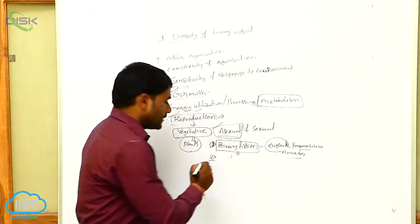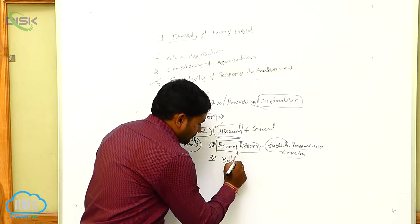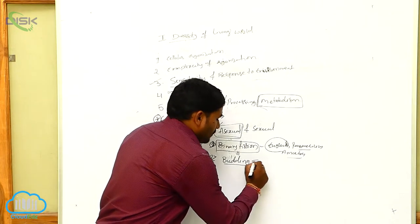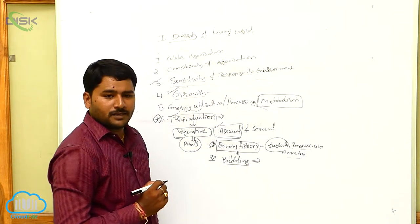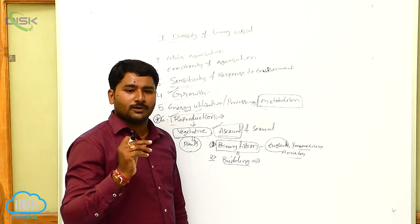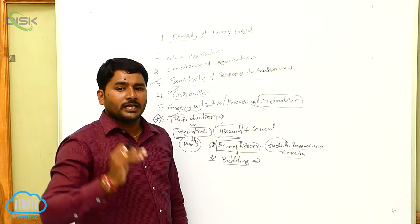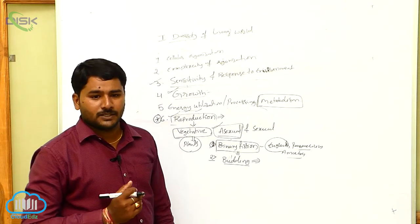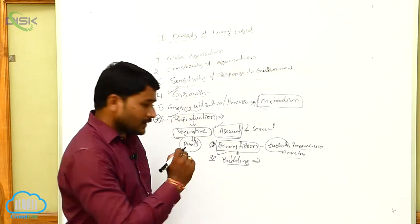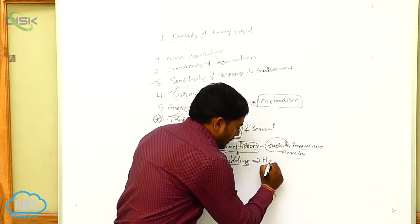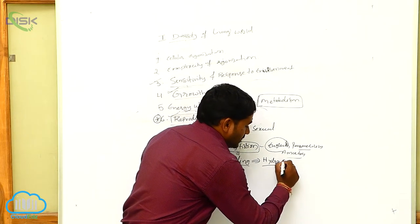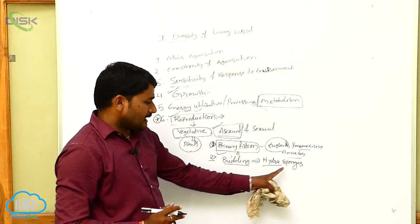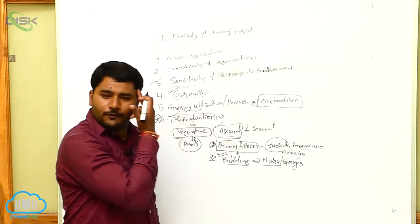The next type is budding. Budding is a type of asexual reproduction in which a bud is formed on the individual, and when this bud is separated from the individual, it develops into an entire organism. For example, Hydra and sponges exhibit the process of budding.